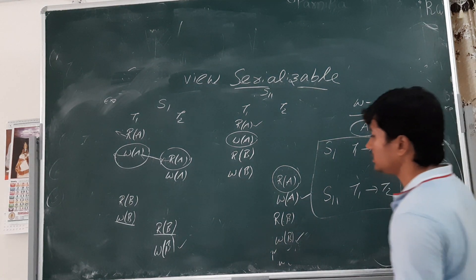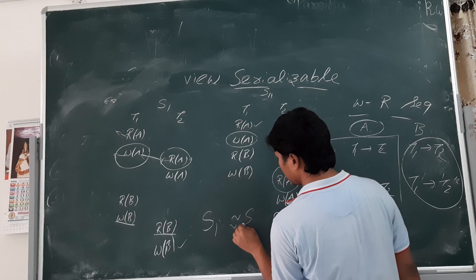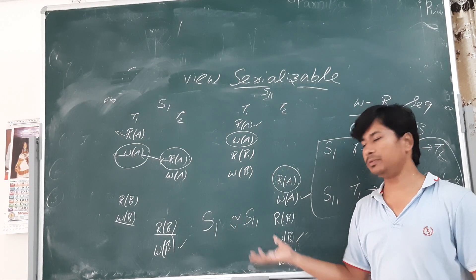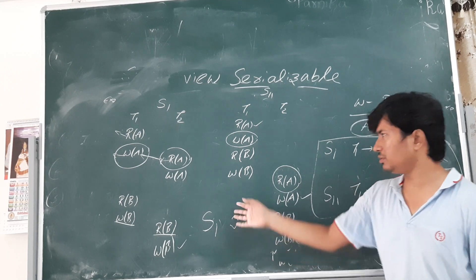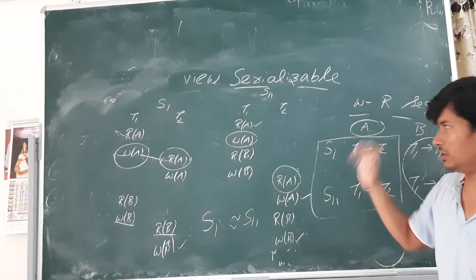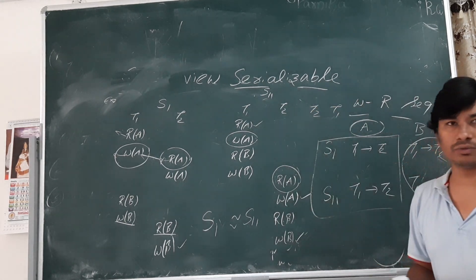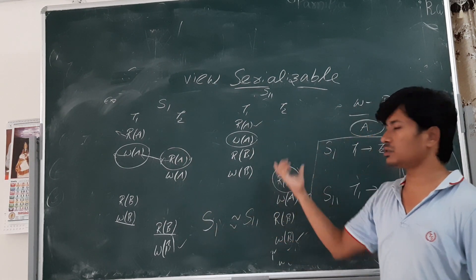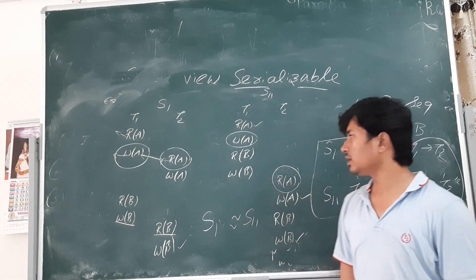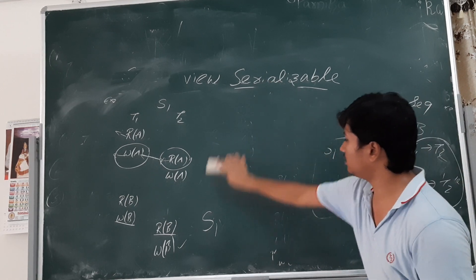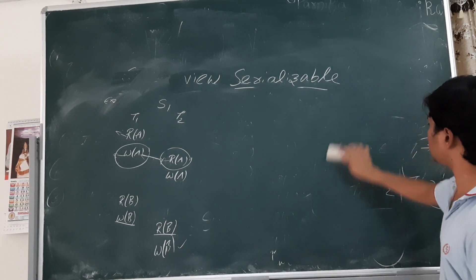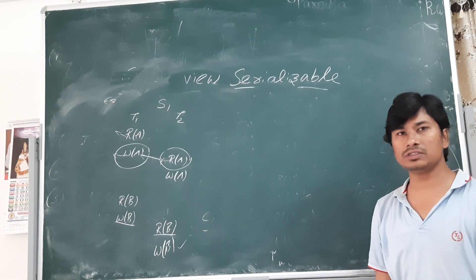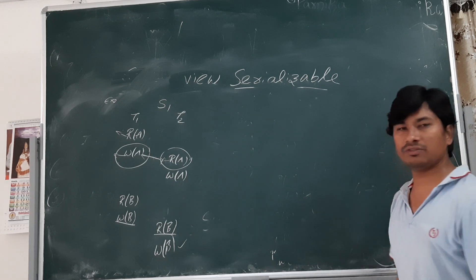All three conditions are satisfied — initial read is same, final write is same, and write-read sequences are same for all data items. So S1 is view equivalent to S11. Since S1 is view equivalent to at least one of its serial schedules, S1 is view serializable. We don't need to check the other serial schedule T2→T1 because we already found that S1 is view equivalent to S11.